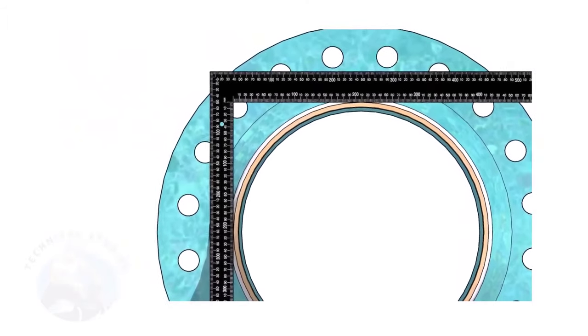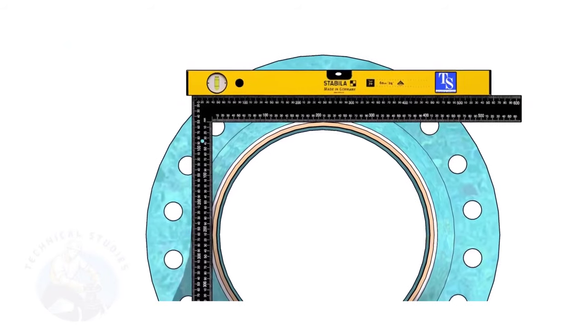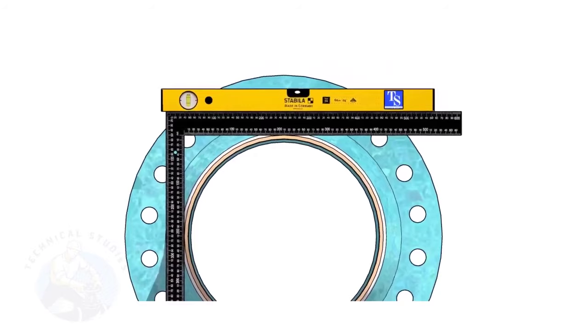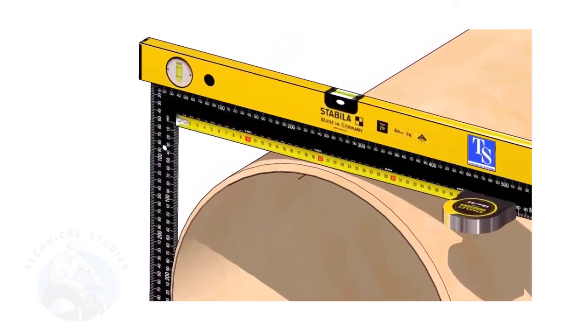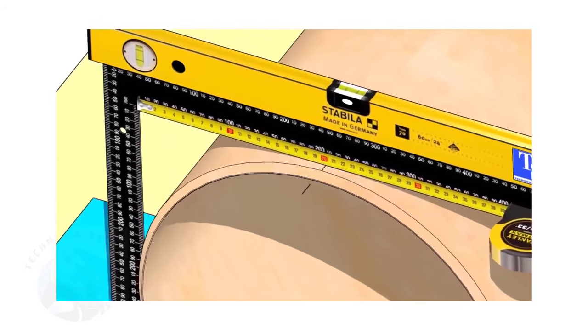Hold a large right angle on the pipe as shown. Put a spirit level on the right angle and correct the top level. Mark half OD of the pipe on the top side. Here, the half OD is 203 millimeters.